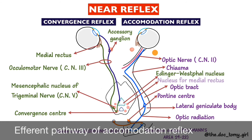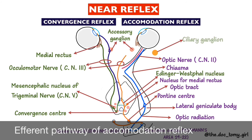From the parastriate cortex, the impulses are relayed to the Edinger-Westphal nucleus of both sides via the occipital mesencephalic tract and the pontine center. From the Edinger-Westphal nucleus, the efferent impulses travel along the third cranial nerve, the oculomotor nerve, and reach the sphincter pupillae and ciliary muscle after relaying in the accessory ciliary ganglion, resulting in constriction of the pupil.